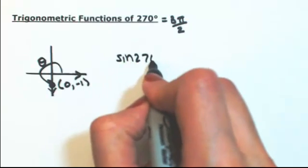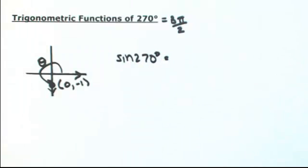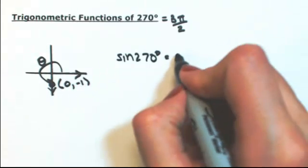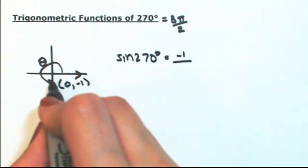So then the sine of 270 degrees, opposite over hypotenuse. The opposite is going to be the y coordinate, which is negative 1. Hypotenuse is just 1.